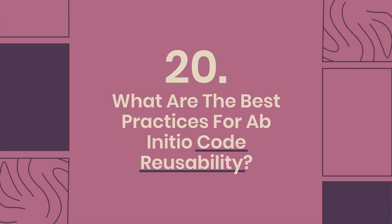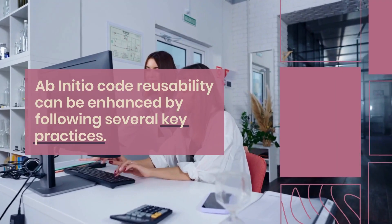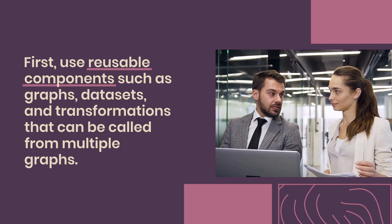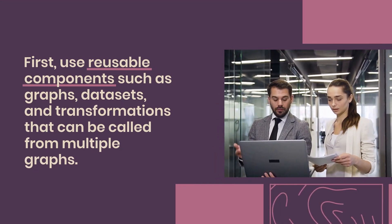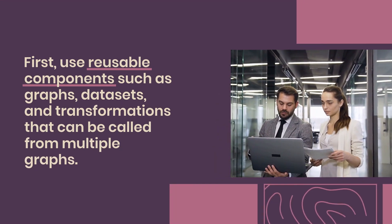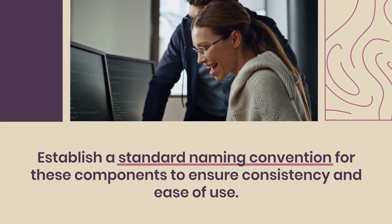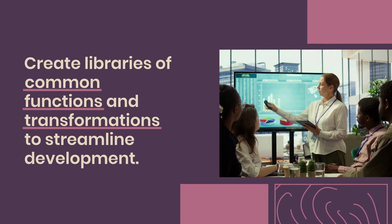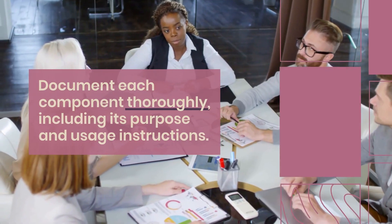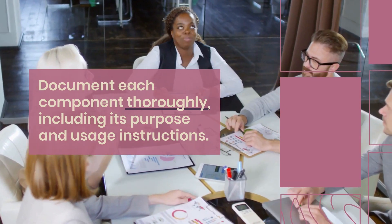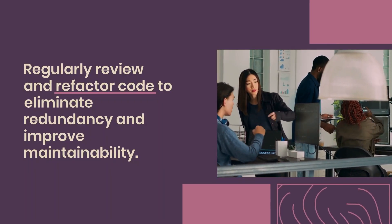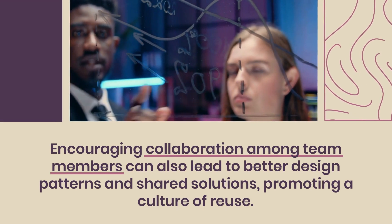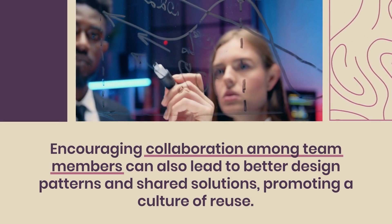Question 20: What are the best practices for AbInitio code reusability? AbInitio code reusability can be enhanced by following several key practices. First, use reusable components such as graphs, datasets, and transformations that can be called from multiple graphs. Establish a standard naming convention for these components to ensure consistency and ease of use. Create libraries of common functions and transformations to streamline development. Document each component thoroughly, including its purpose and usage instructions. Regularly review and refactor code to eliminate redundancy and improve maintainability. Encouraging collaboration among team members can also lead to better design patterns and shared solutions.